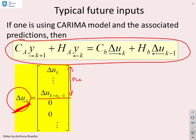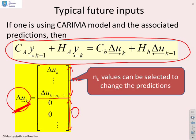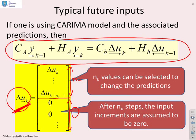If you've forgotten that, go and look at the chapter one videos. And what we're going to do is we're going to say that the future controlled increments, so this delta U future, you'll notice what have we done? We've said I've got NU values that I can choose, and then after that, I'm going to assume that all the control increments are zero. So, NU values can be selected to change the predictions, and after NU steps, the input increments are assumed to be zero.